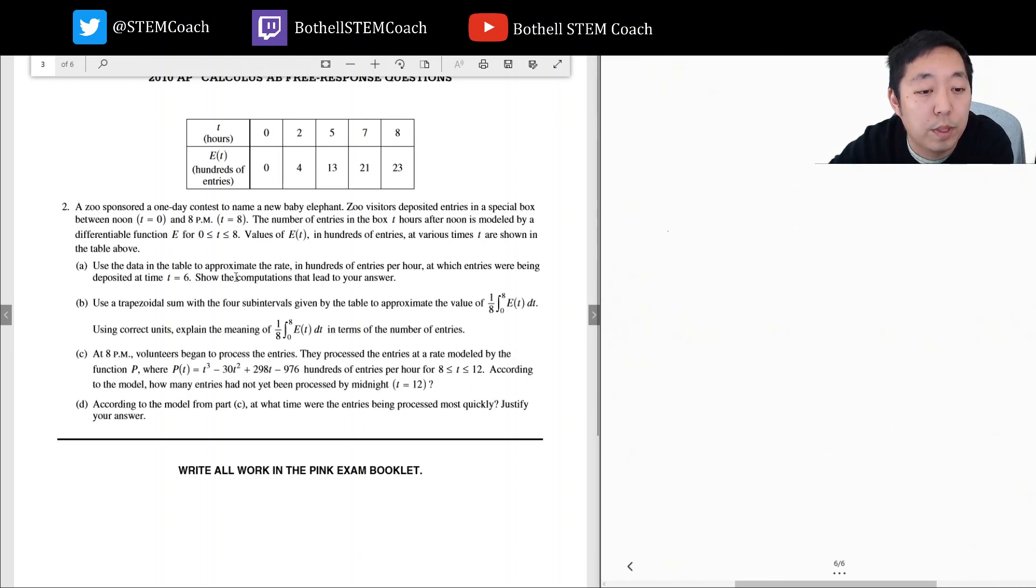Use the data in the table to approximate the rate in hundreds of entries per hour which entries were being deposited at time t equals six. Show the computations lead to your answer. Okay, this one's pretty easy. What we're gonna do is the rate, the rate is a slope here because there's hundreds of entries per hour. So I'm gonna do some kind of slope to approximate time t equals six.